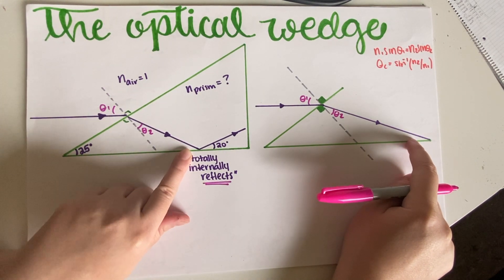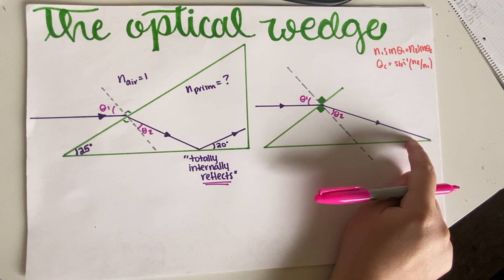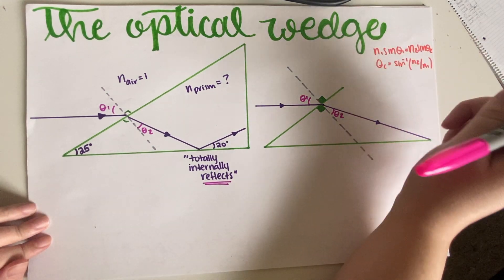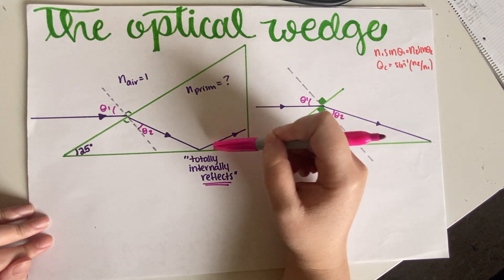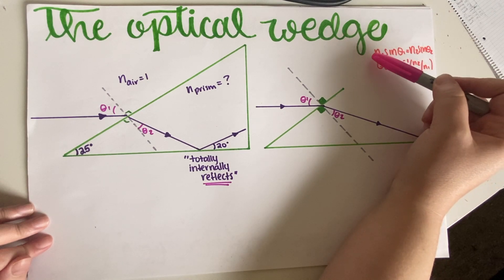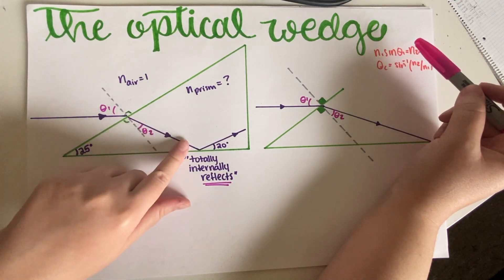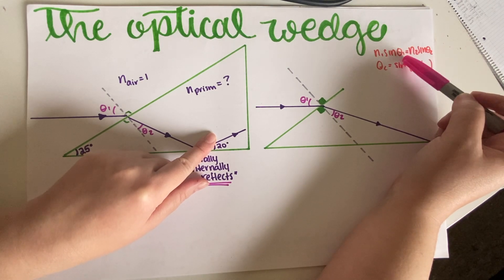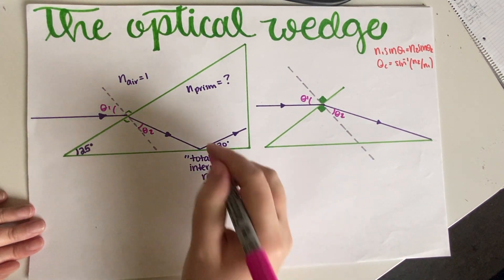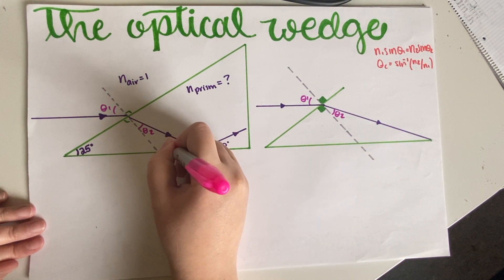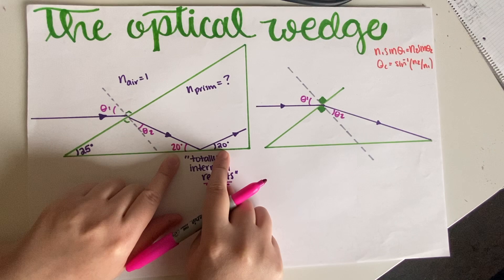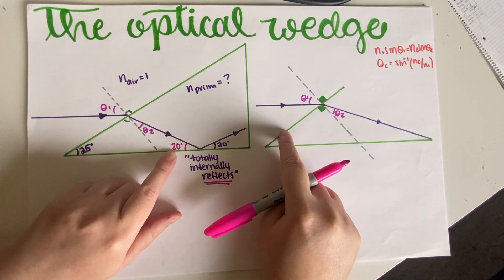We still have to figure out what this angle is, but we're going to start with this angle. Because if you remember, as a direct consequence of Snell's law, whenever something reflects, the angle of incidence and reflection is the same because you're still in the same material. You haven't left the prism, so n1 and n2 is the same, therefore your angles must be the same. Which means that because it reflects over here, this angle has to be 20 degrees because this angle is 20 degrees over here.